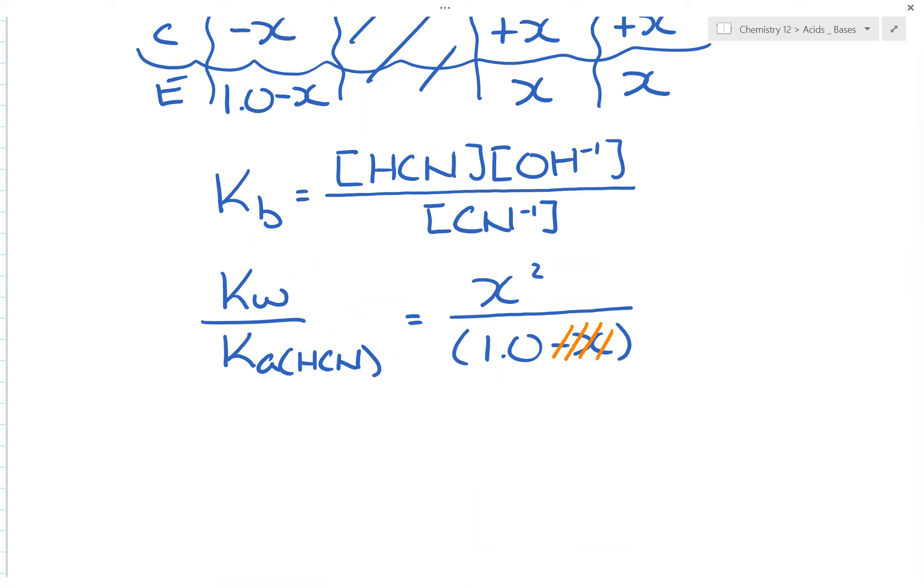Now, so then plugging in your calculation, this would be, if we were to do this here, this would be 1.0 times 10 to the negative 14 divided by the Ka of the conjugate acid, which is 4.9 times 10 to negative 10, that's equal to x squared over 1.0.